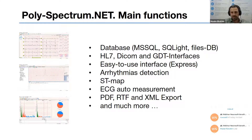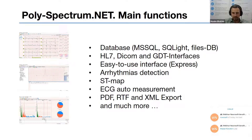The software has an easy-to-use interface called Polyspectrum Express. Polyspectrum Net also includes arrhythmia analysis — it can detect supraventricular and ventricular premature contractions, and wide QRS tachycardia. During ECG recording, you can observe an ST map showing ST displacement values. The ECG measurement function works in both online and offline modes. Finally, all reports, tables, and charts can be exported to PDF, RTF, and XML formats. There are many more functions, but we have limited time.